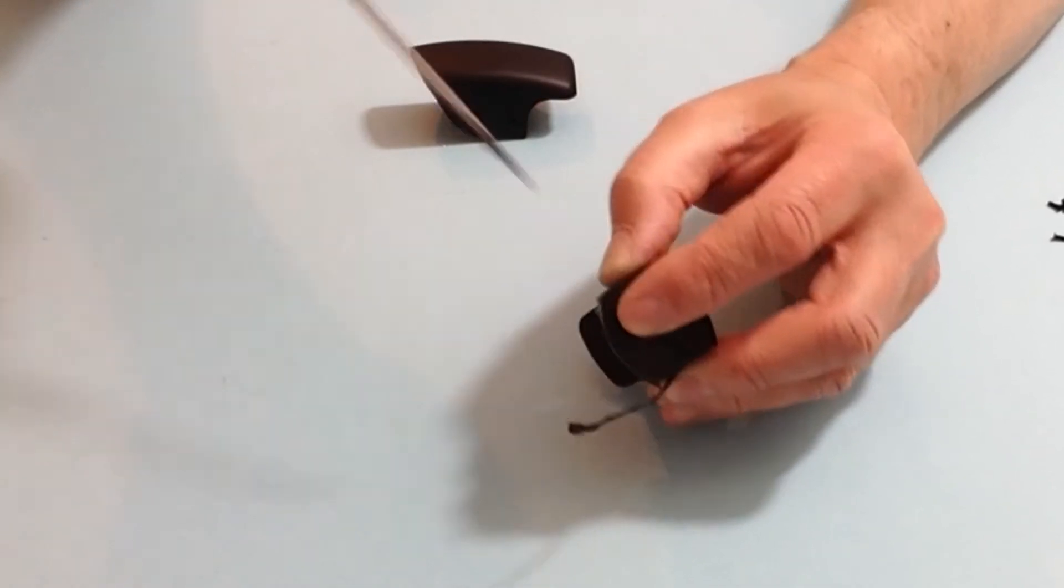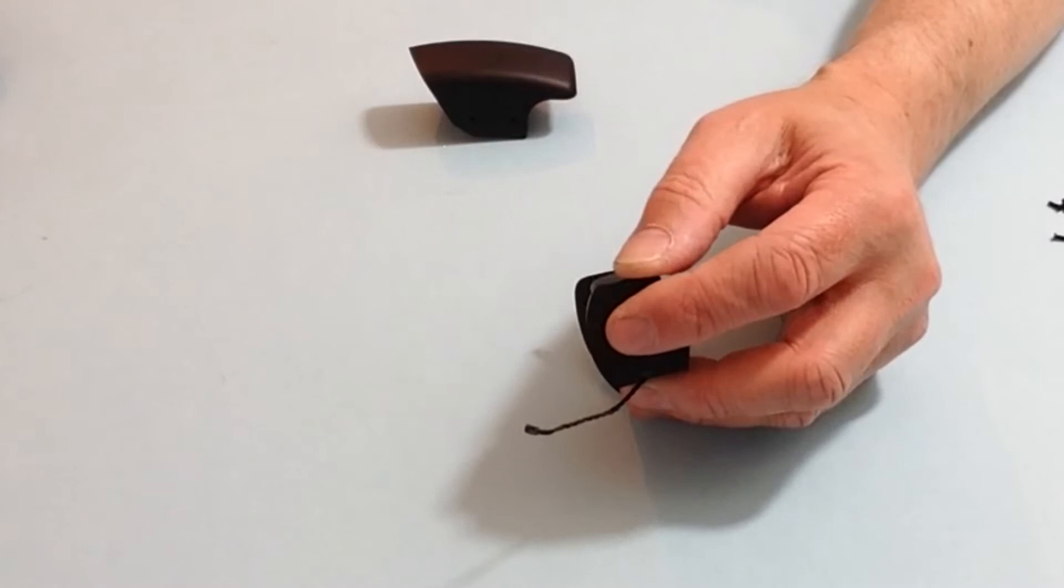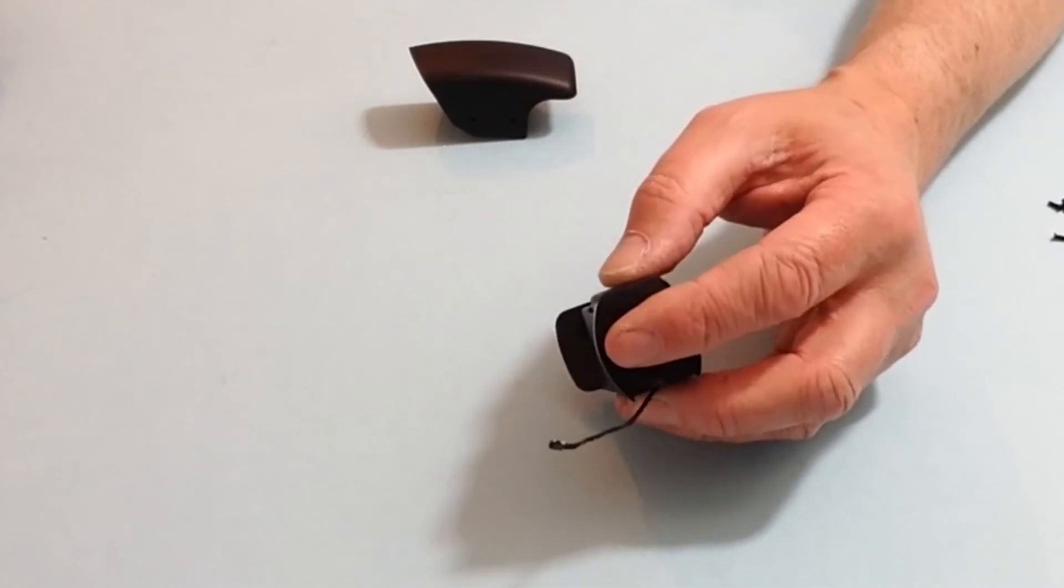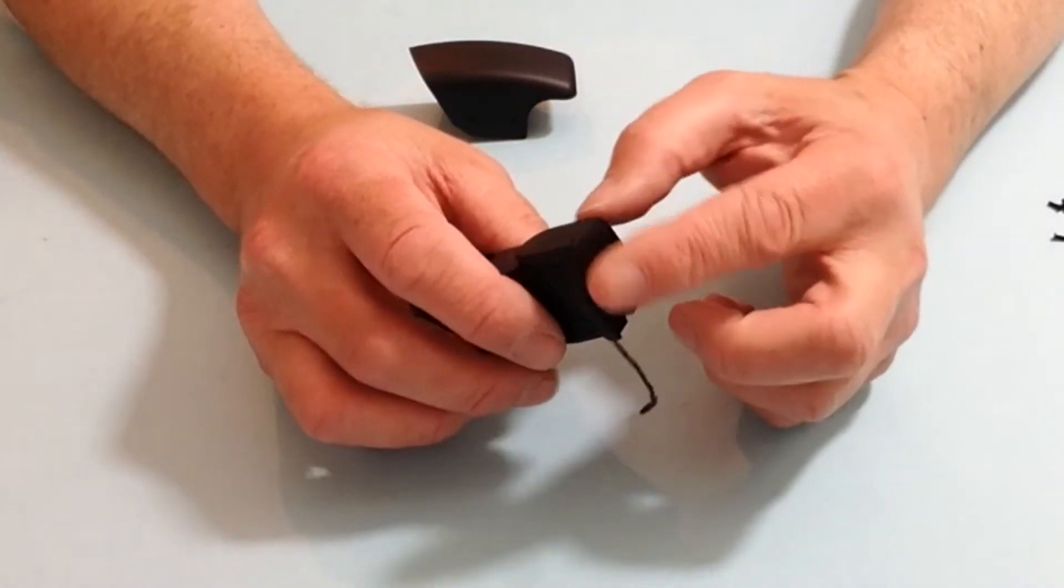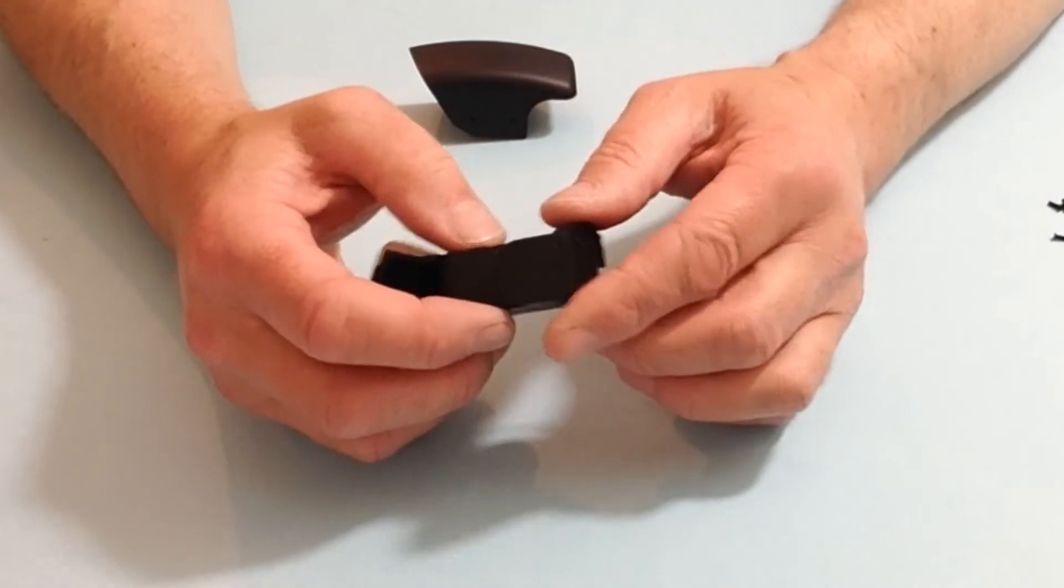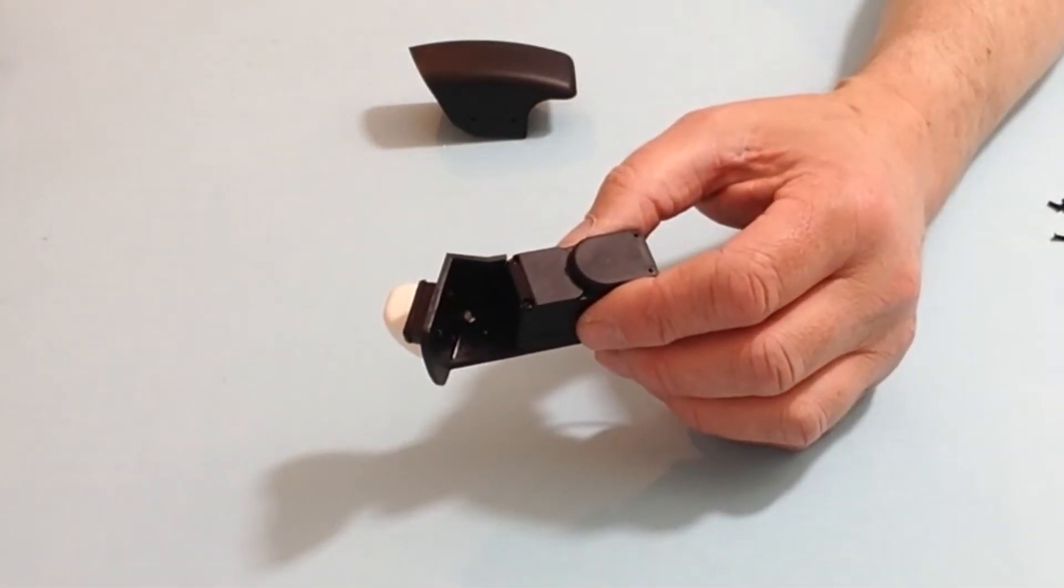The two screws that you are going to be using for that are the 8mm M2 countersunk screws, which are the longer ones out of the screws supplied with this stage.